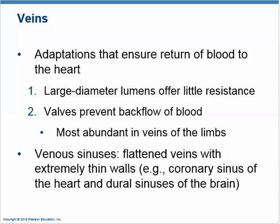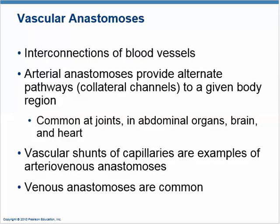A sinus acts like a vein but doesn't have the adaptations that a vein has. An anastomosis is an interconnection of blood vessels without capillary beds — it gives alternate pathways. When two arteries come together they're called arterial anastomoses. We have them around joints, in the heart, and in the brain as secondary routes — essentially a backup in case something goes wrong.